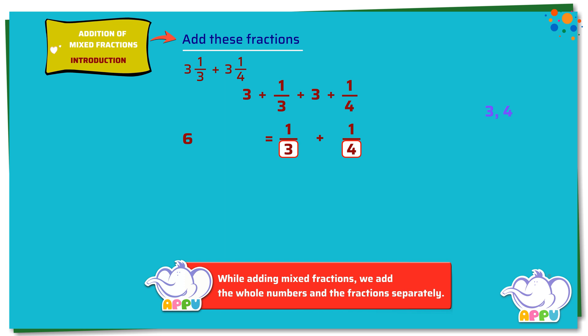To find the LCM of 3 and 4 using the division method, we write the denominators separated by a comma. Then we divide these numbers by the least prime number that divides any of these two numbers. Here we start with 2. 3 is not divisible by 2, so we write 3 as it is.